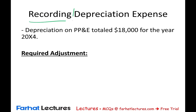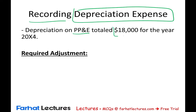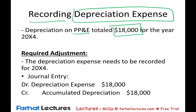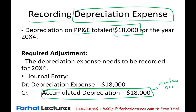Let's look at recording depreciation expense — this should be straightforward. Depreciation on property, plant, and equipment is $18,000. The entry is: debit depreciation expense, credit accumulated depreciation. Remember, accumulated depreciation is a contra asset account — it reduces the property, plant, and equipment balance. Pretty straightforward.